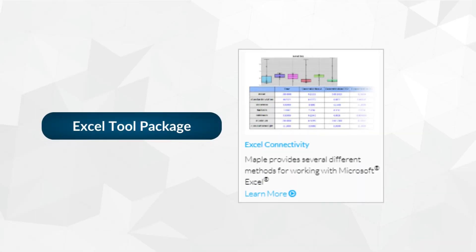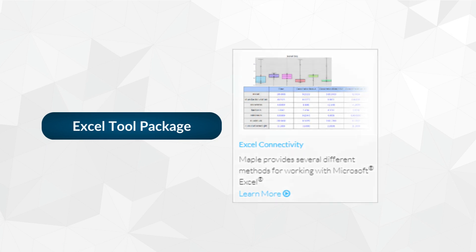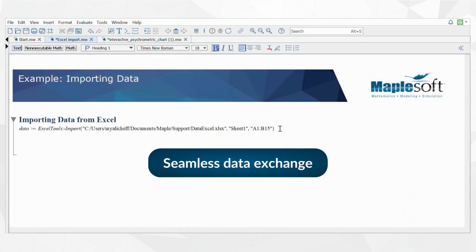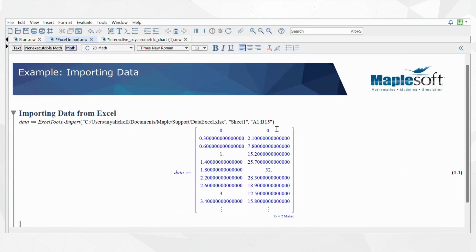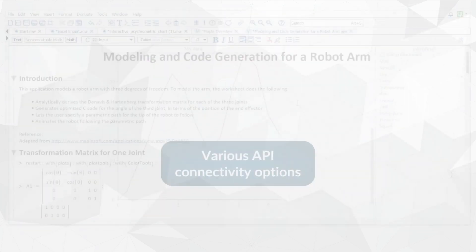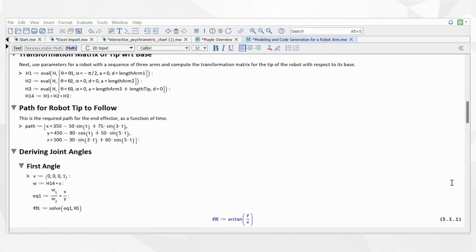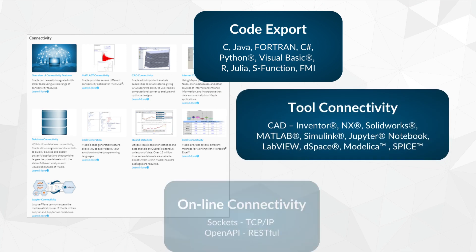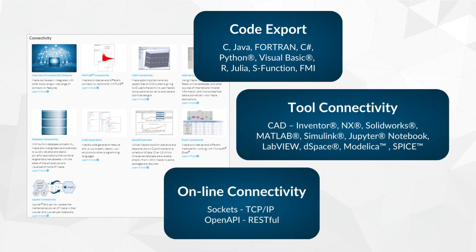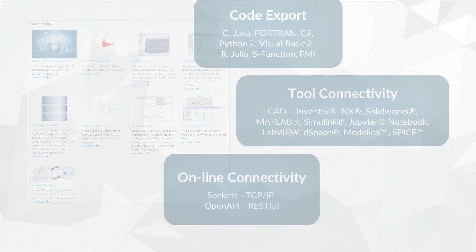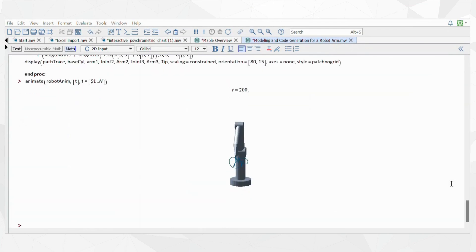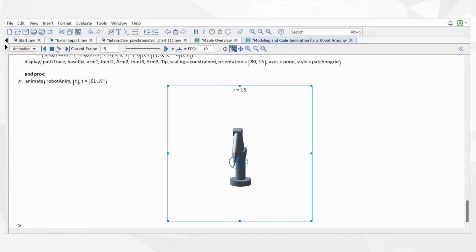For Excel users, the Excel tool package facilitates seamless data exchange between Excel and Maple to read values, perform analysis, and write back the results. The various API connectivity options in Maple make it easy to handle external data. And if you're working with programming and scripts in languages such as Python, C, or Visual Basic, you can import and export your translated procedures, giving you the ability to work in your preferred environment.